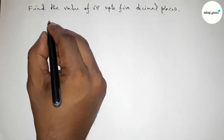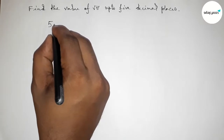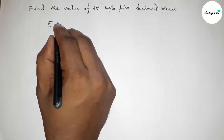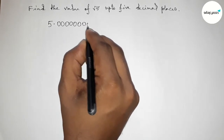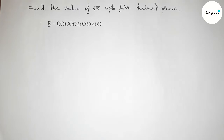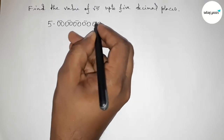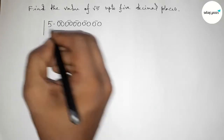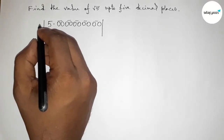First of all, write down the number 5 and place a decimal point here. For five decimal places we have to write 10 zeros. Making them as pairs, so taking two zeros as a pair, we get 5 pairs of zeros. Now drawing the division line on both sides.